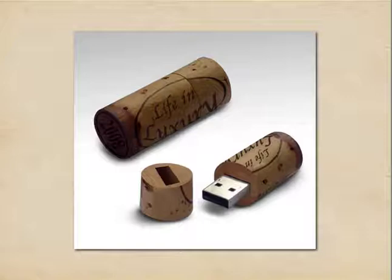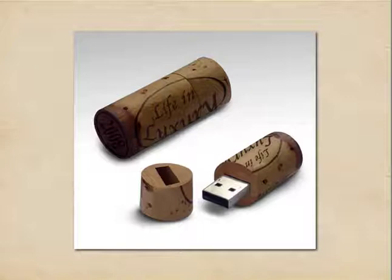Now bits actually started out as real big physical things. Here is a picture of something called a core memory. Each one of those little black donuts is called a core and it's a little magnet. When you run electricity through the wires, you can see vertical, horizontal and diagonal wires. When you run information through the wires, it causes the little magnetic donut to flip from one orientation to another. If it's flipped one way it means zero, if it flips the other way it means a one.